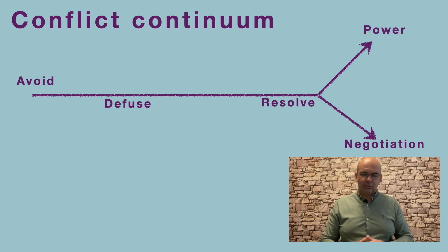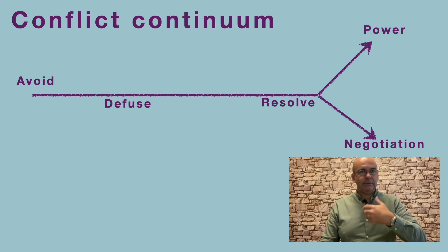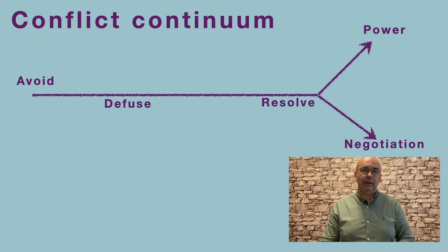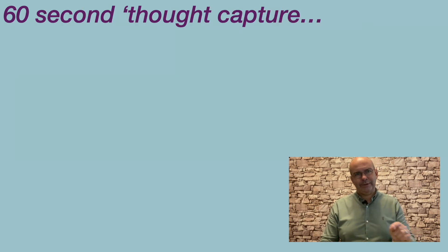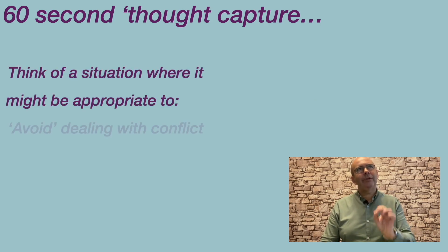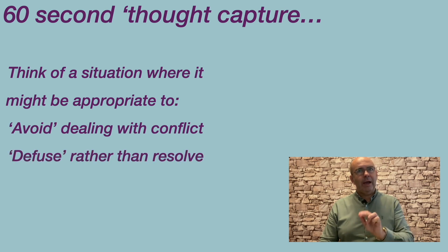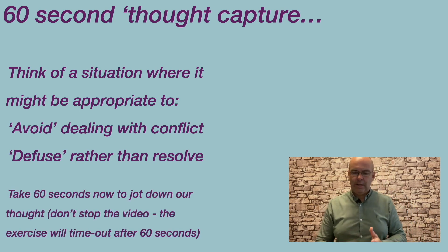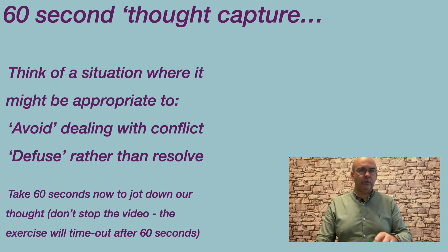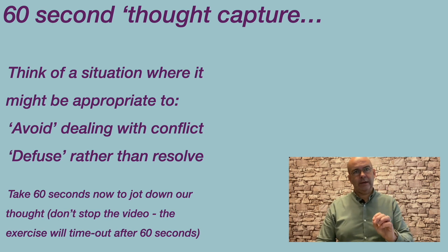Negotiation is the actual ideal, and what we're seeking there is the win-win. Now, another 60-second capture. Think of a situation where it might be appropriate to avoid dealing with conflict — when is avoiding the right thing to do? Also, when do you think it might be particularly useful to diffuse rather than resolve? Think about situations in your own student leadership life where diffusing is the name of the game. Jot some thoughts down and take 60 seconds now.